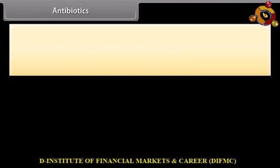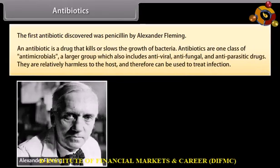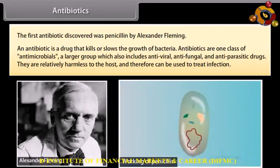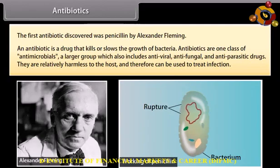Antibiotics. The first antibiotic discovered was penicillin, by Alexander Fleming. An antibiotic is a drug that kills or slows down the growth of bacteria. Antibiotics are one class of antimicrobials, a larger group which also includes antiviral, antifungal, and antiparasitic drugs. They are relatively harmless to the host and therefore can be used to treat infection. Penicillin works by preventing the production of peptidoglycan, the substance that forms the cell wall. This means the cell will continue to grow without dividing or developing a new cell wall, so the wall gets weaker and eventually ruptures.